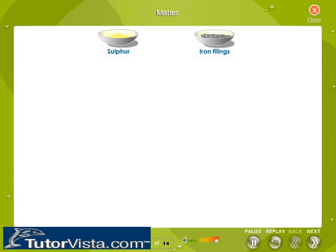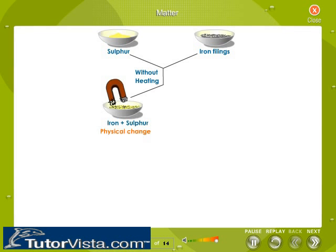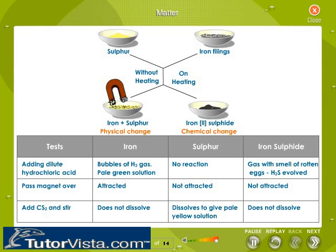Formation of a chemical compound is a chemical change, and a compound's properties are entirely different from its constituent elements. For example, when you mix iron and sulphur without heating, a magnet still attracts the iron filings, showing that iron and sulphur remain as separate entities with no chemical reaction between them. However, on heating, they undergo a chemical reaction and form ferrous sulphide, on which the magnet has no effect.